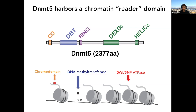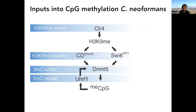Our initial studies concluded that DNMT5 is recruited by H3K9 methylation, that CLRC4 is upstream of everything — promoting H3K9 methylation — and this is read redundantly by the chromodomain of DNMT5 and also HP1 in Cryptococcus. Cryptococcus has a single HP1 homologue, which we named SWI6 as an homage to S. pombe. DNMT5 does the methylation, and there is also a UHRF1 ortholog in Cryptococcus neoformans that acts in parallel to DNMT5's chromodomain and HP1.